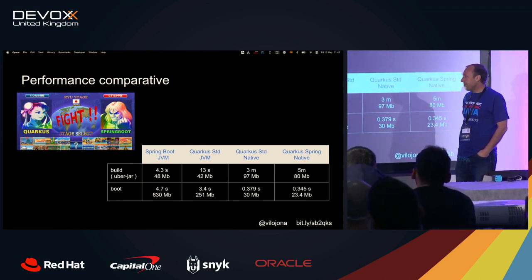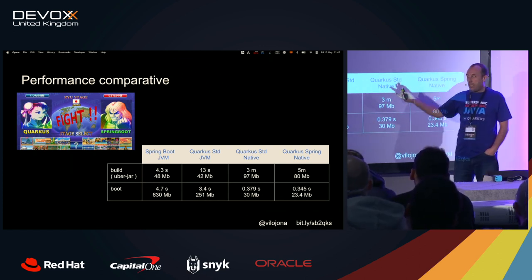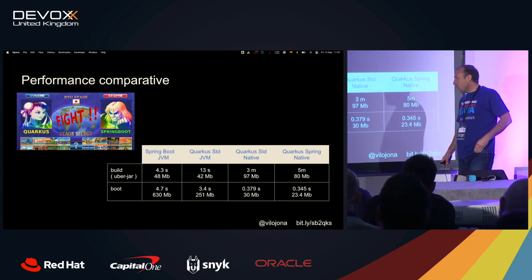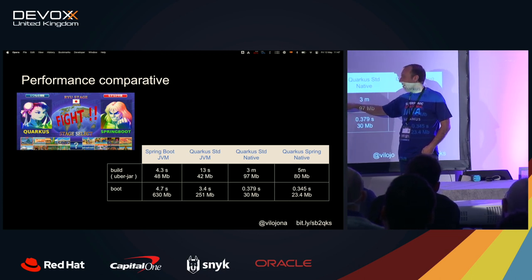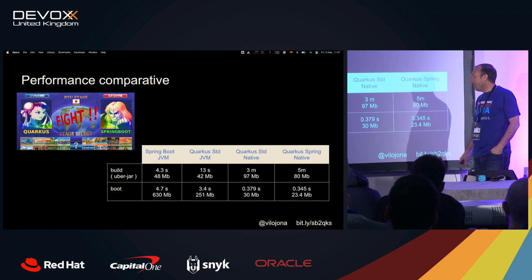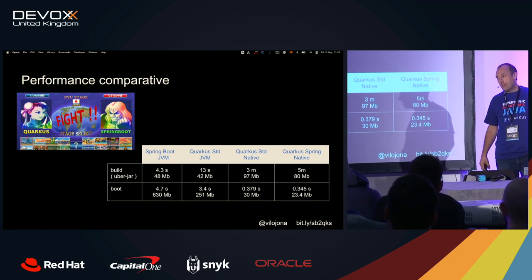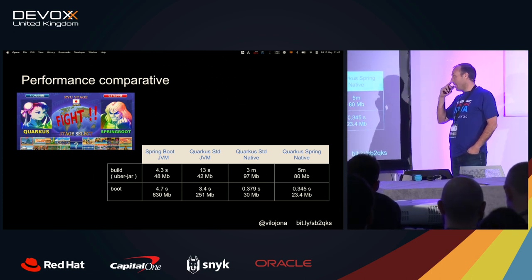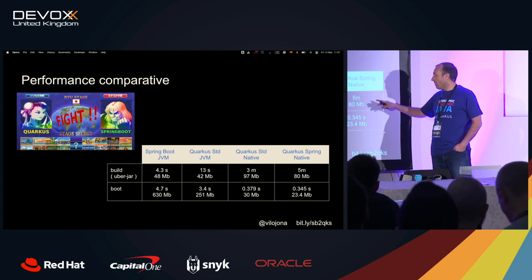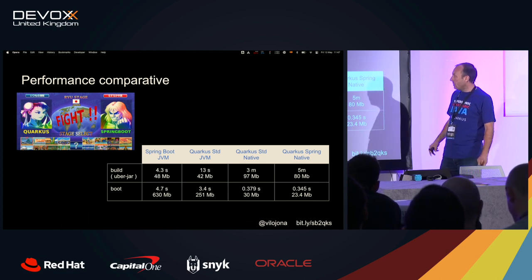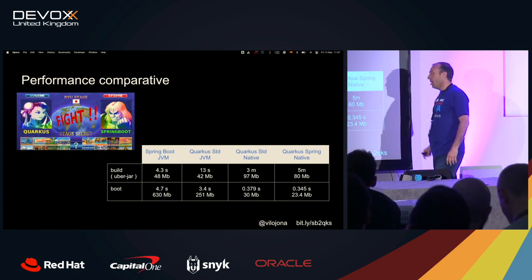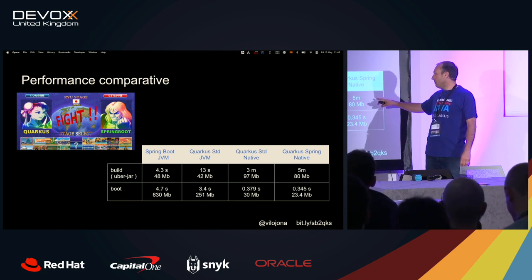Let's talk about build time. Spring Boot JVM takes four seconds to produce an artifact of around 48 megabytes. With Quarkus — well, it's not worth it at all: 13 seconds, and more or less the same size. Let's go to native — three minutes. So build time is totally a waste, and it produces an artifact that is double the size. Build time: no gain at all.